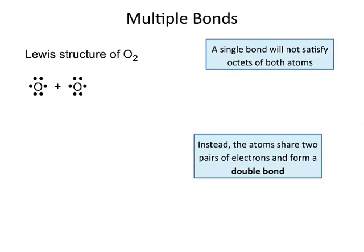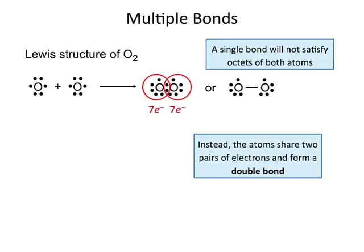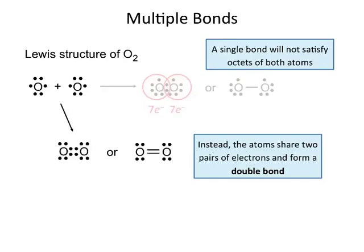Now let's talk about oxygen. Each oxygen has six valence electrons, and let's make O2. If we make a single covalent bond, you don't get octets for all of them — each one has only seven electrons, and that's not what this wants. So instead, oxygen will make a double bond and share two pairs of electrons. In doing so, each oxygen now has eight electrons in the structure and has its octet.